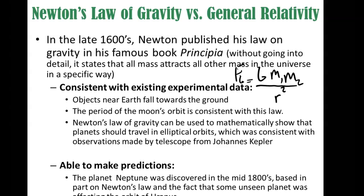In fact, the planet Neptune was discovered mathematically before it was actually observed, because they noticed that the orbit of Uranus didn't match what Newton's law predicted. They were able to hypothesize that another planet must be out there, do calculations to know where to point the telescope, and that's how they discovered Neptune. Newton's law was also used to show mathematically that planets should travel in elliptical orbits, which is consistent with observations made at the time.